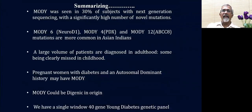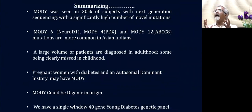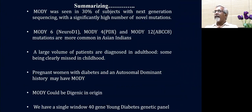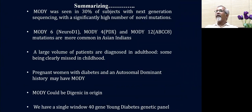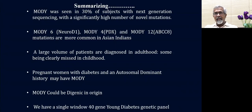To summarize: MODY is seen in about 30% of our patients with young-onset diabetes. A large volume of these patients are picked up in adulthood, some clearly missed in childhood. Pregnant women with diabetes and an autosomal history may have MODY, which could also be digenic in origin. We have a single-window 40-gene panel for young-onset diabetes using NGS, which can be cost-effectively used for diagnosis.